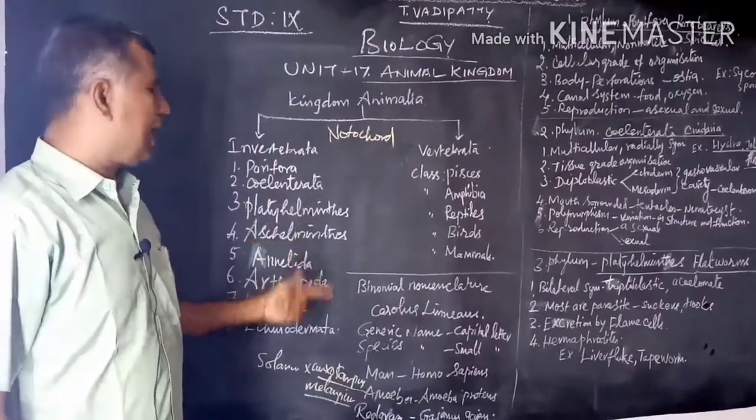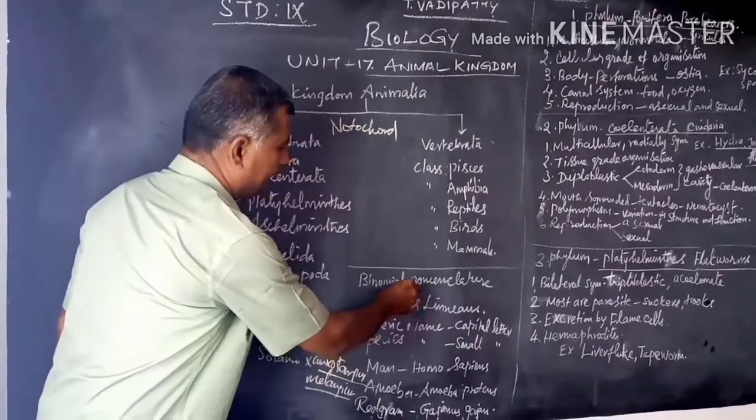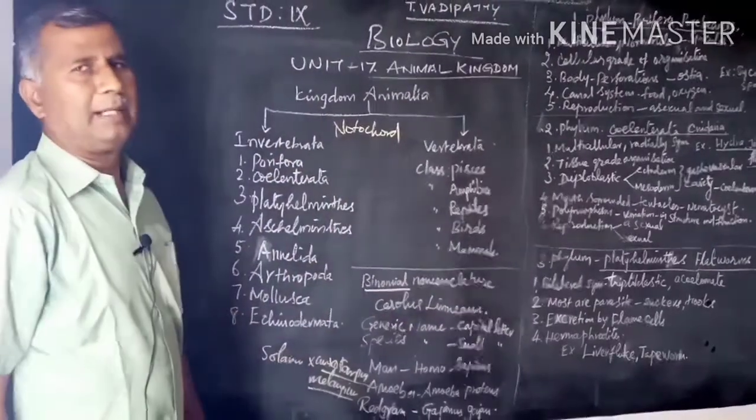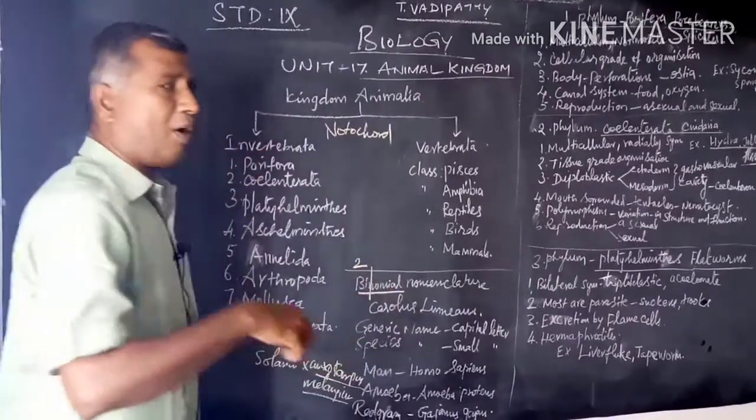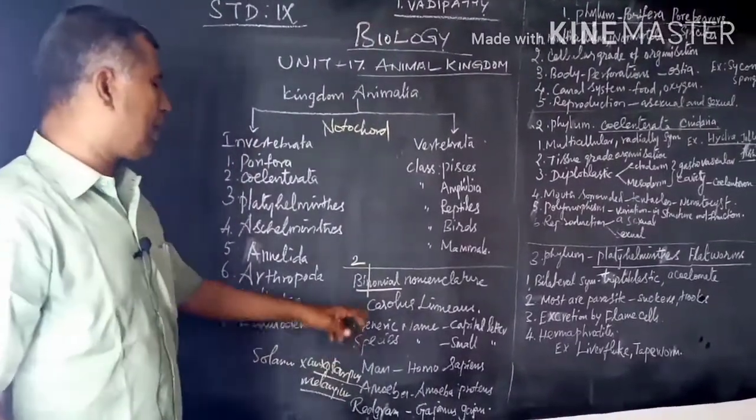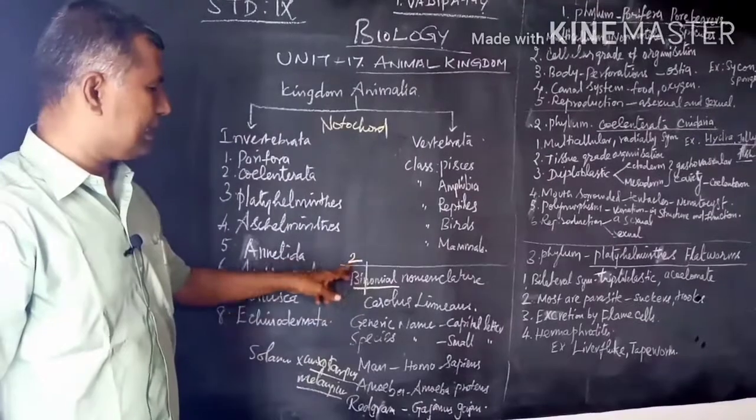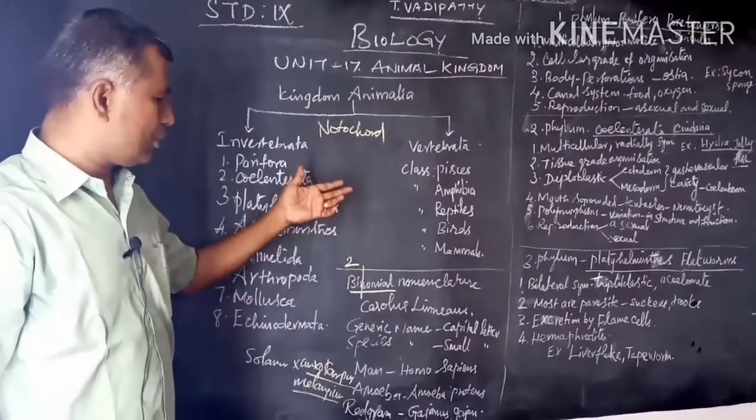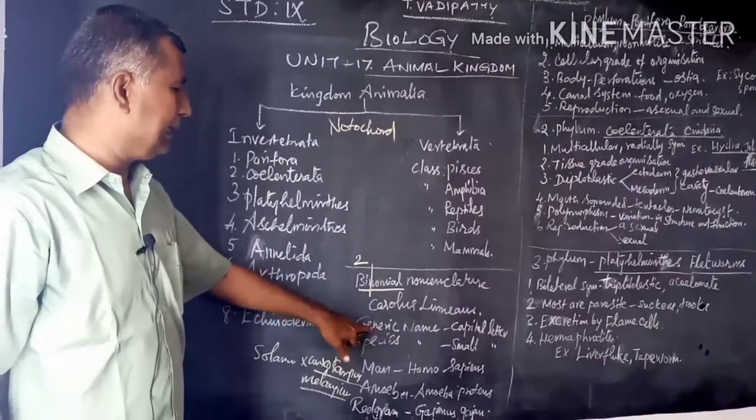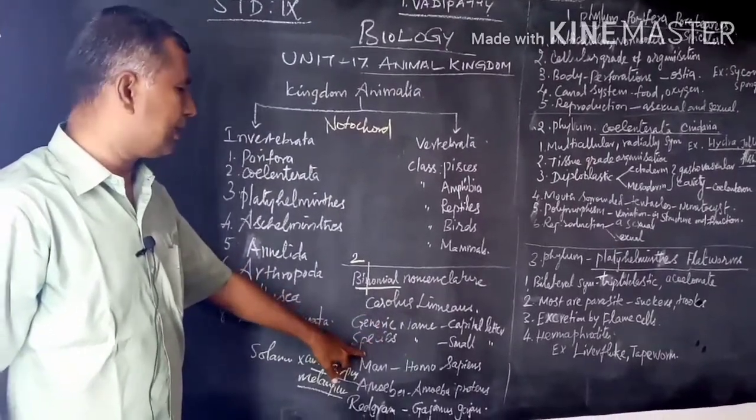Linnaeus named each animal with two names. This is called binomial nomenclature. 'Bi' refers to two. To avoid confusion, Carlos Linnaeus named each animal with two names: the first one is called the generic name, the second name is called the species name.